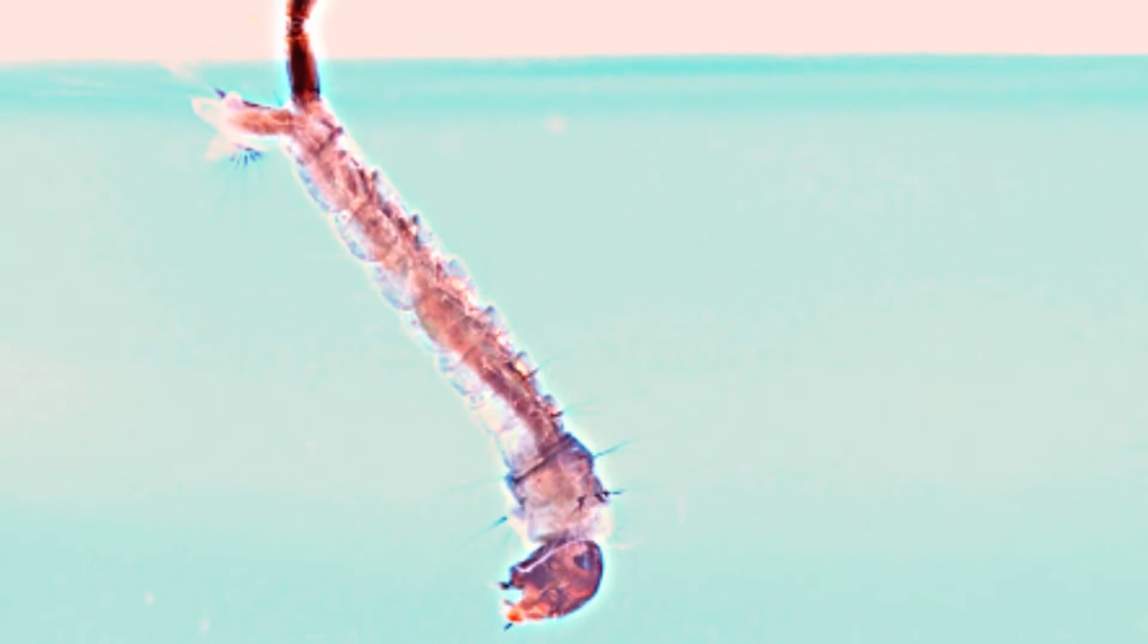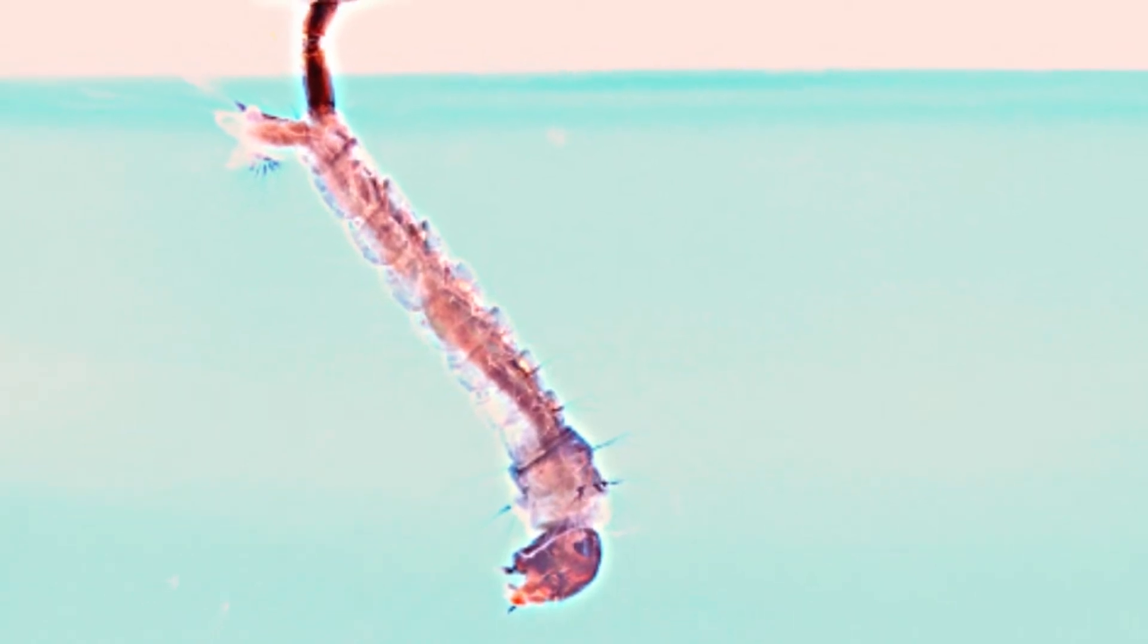The Aedes larvae develop in 4 instars. The Aedes larvae are vertical in position on the water surface. The larvae feed on organic material in water. The larvae are short in length and plump. The respiratory siphon is also short and plump.